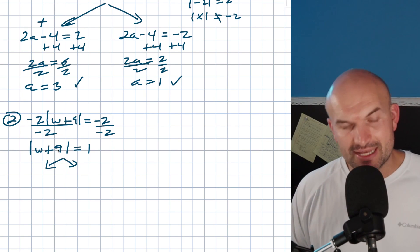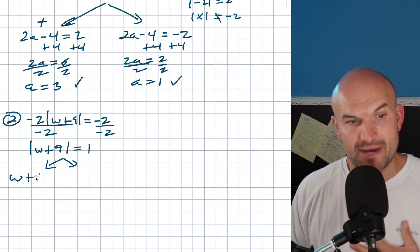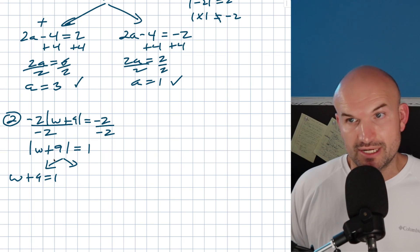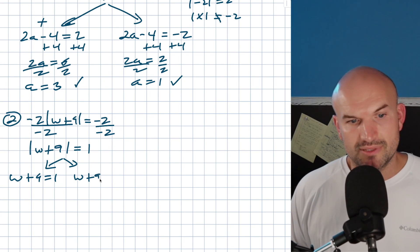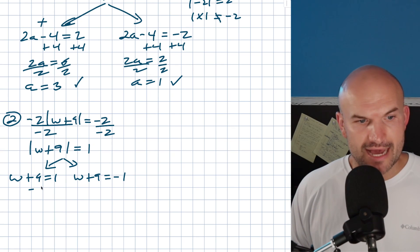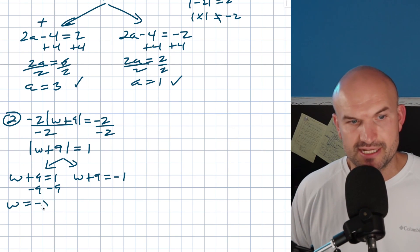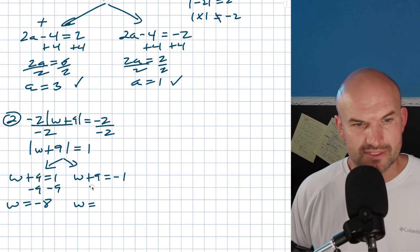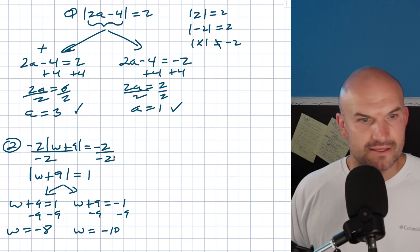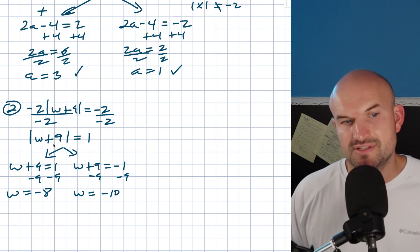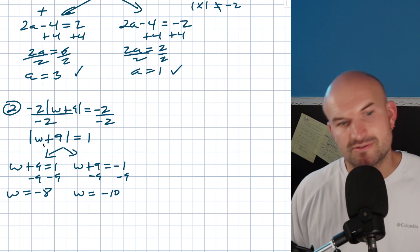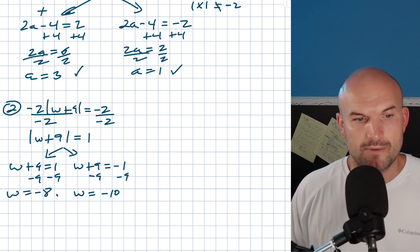Now we can create our two cases: w plus 9 equals 1 (the positive case), or w plus 9 equals negative 1 (the negative case). Using inverse operations: w equals negative 8, and w equals negative 10. Checking mentally: negative 8 plus 9 is 1, absolute value of 1 is 1; negative 10 plus 9 is negative 1, absolute value of negative 1 is 1. Both solutions work.